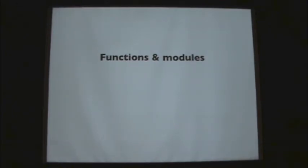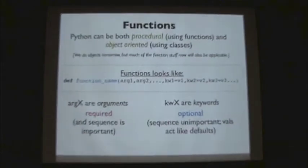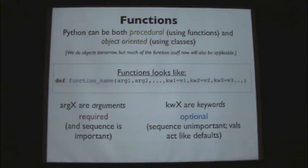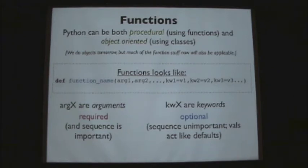Functions and modules. Python can be both procedural, that is using functions, and object-oriented, using a concept called classes. We'll see lots of object-oriented programming tomorrow. But what we're going to talk about today mostly is functions, which in some sense is more base. You can use Python with an object-oriented paradigm, but it's pretty hard not to use it in a procedural way.